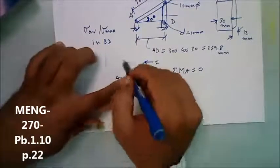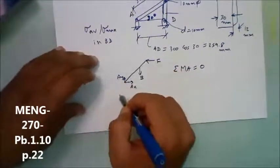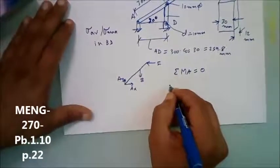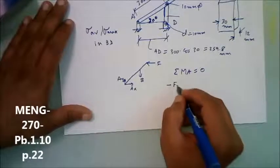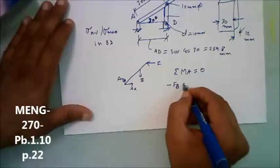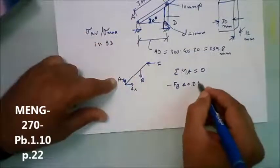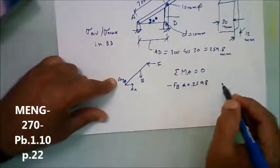Is it positive or negative for FB? B is negative. Okay, then force in B multiply by this distance, this distance is 259.8.